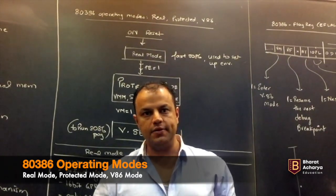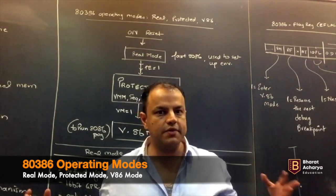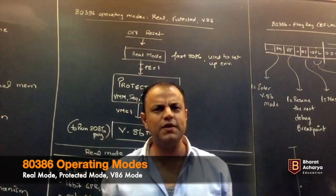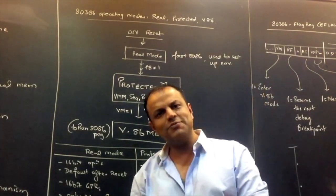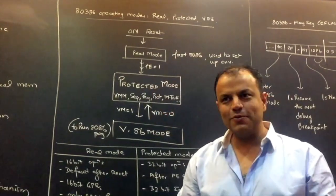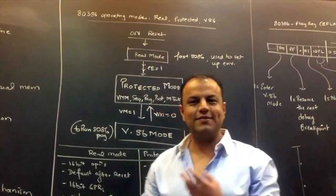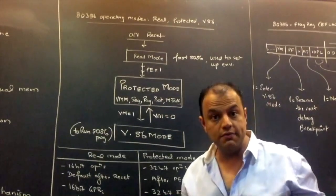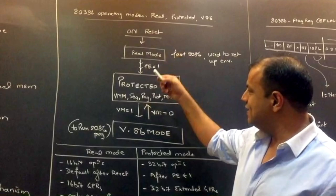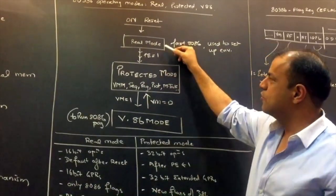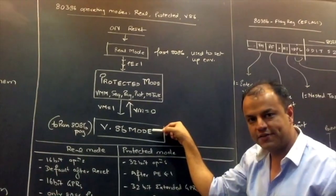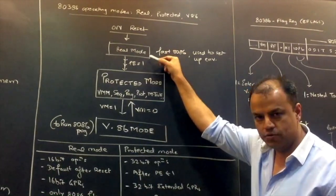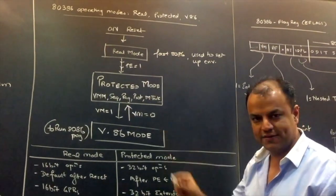Before you take the plunge into 386 and start understanding everything about it, there is something you need to know. That's called operating modes. On a lucky day, even this comes as a question. I will say lucky because the other answers are so intense. This is such a light answer. But you still have to know it. So 386 has three operating modes called real mode, protected mode and virtual 86 mode.